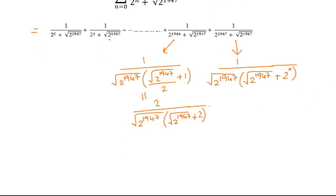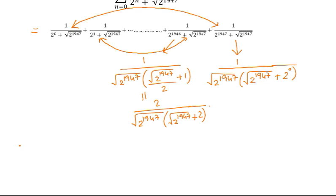Now we can see that if we make pairs of equidistant terms from the beginning and end — pairing the first and the last term, then the second from the beginning and second from the last — the first from the beginning and the first from the end can be clubbed together.